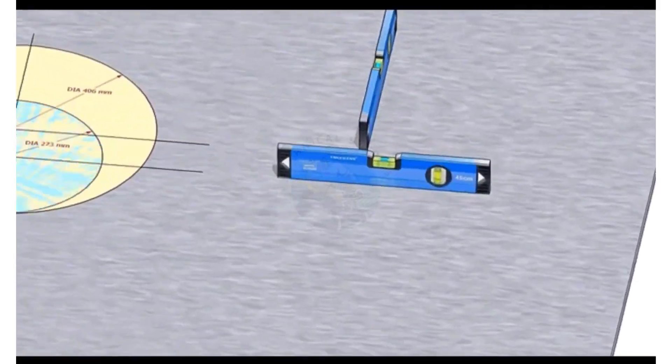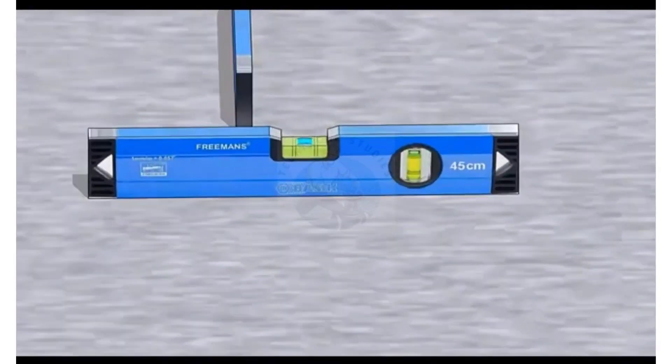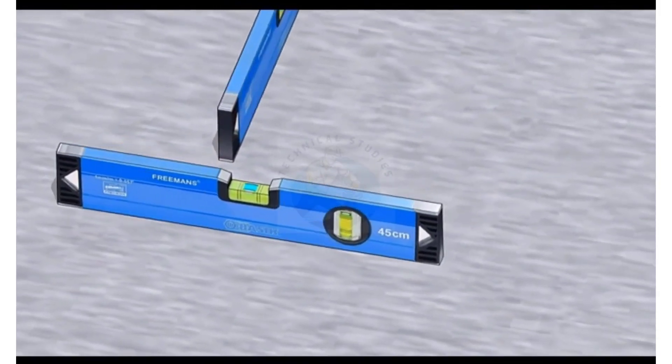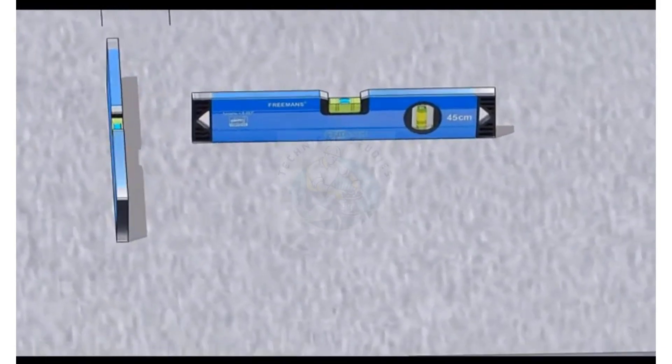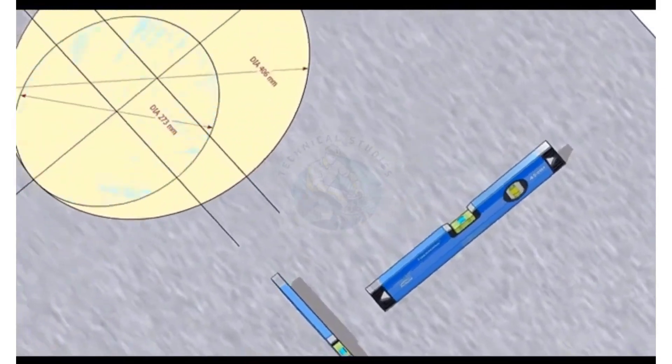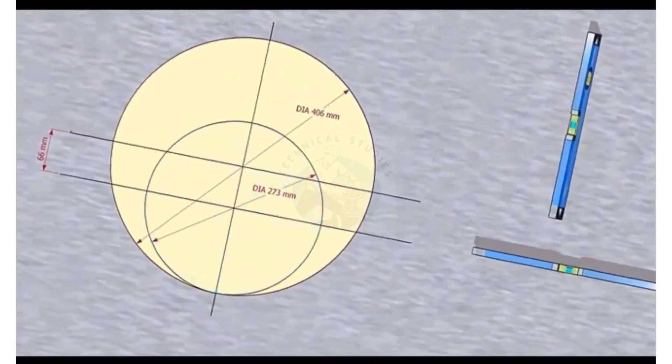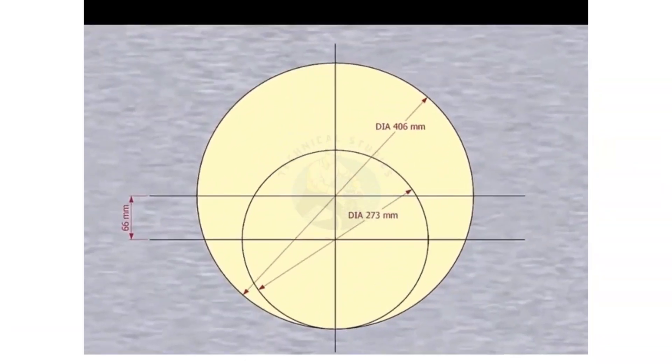Check the levelness of the platform. Please remember that our reducer size is 16 inch by 10 inch. The large side OD is 406 millimeters, the small side OD is 273 millimeters, and the eccentricity is 66 millimeters.